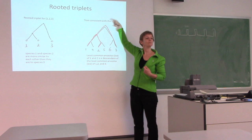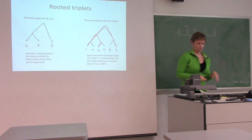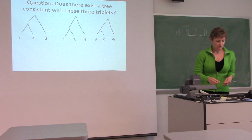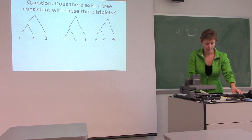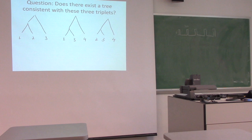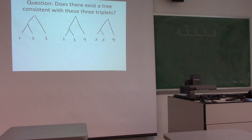So as our input we're getting these types of relationships, and as output we want to find a tree that is consistent with that information. Does there exist a tree that is consistent with the three triplets written here? We've got four species and we're given this branching information — is there one tree that explains how all four species evolved consistently with all three inputs?